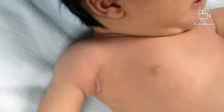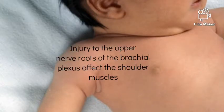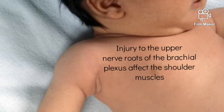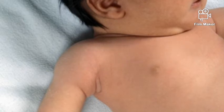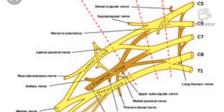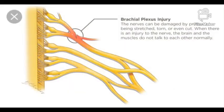Erb's palsy causes weakness in the shoulder muscles. It is a condition that affects the upper nerve roots of the brachial plexus. So you could imagine the nerves that will be affected.